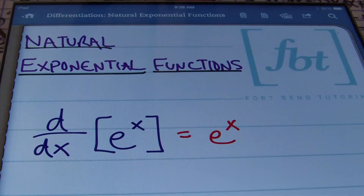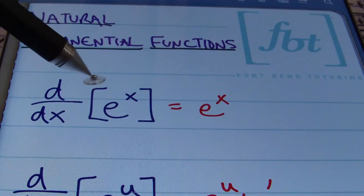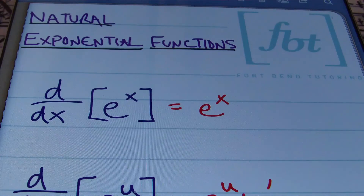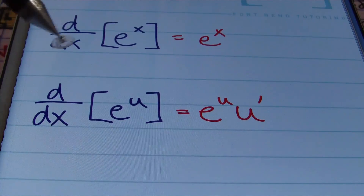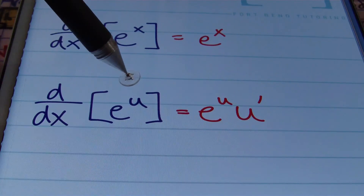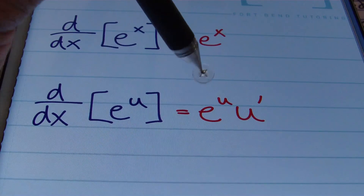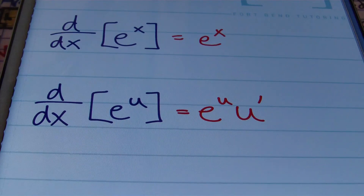Here we have a few rules for finding the derivative of natural exponential functions. Our first rule states that when finding the first derivative with respect to x of a function of the form e to the x, then the derivative is simply e to the x. If you're finding the first derivative of e to the u, where u is a function of x, then the derivative is e to the u times the derivative of u.